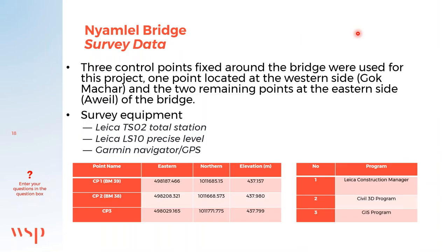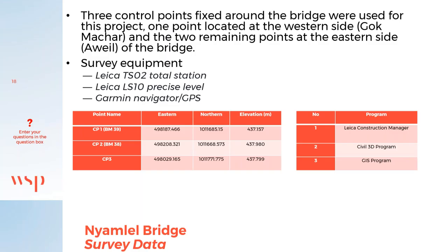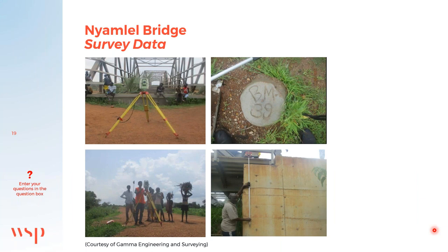Looking at the survey data, there were three control points fixed around the bridge used according to the coordinates shown in the table. The survey equipment used was a Leica TS-02 Total Station, a Leica LS-10 Precise Level, and a Garmin Navigator GPS. The programs used were Leica Construction Manager, Civil 3D, and a GIS program. Pictures of the surveying show the control points and the survey equipment being used on site.